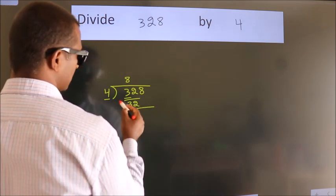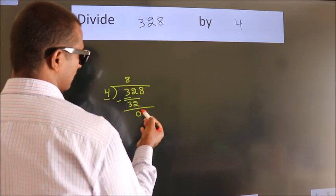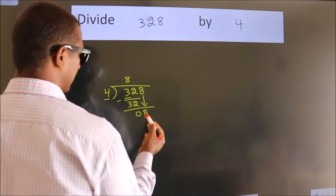Now we should subtract. We get 0. After this, bring down the beside number. So 8 down. So 8.